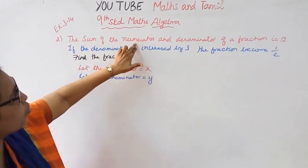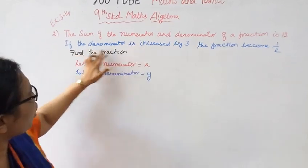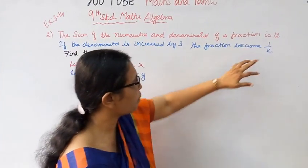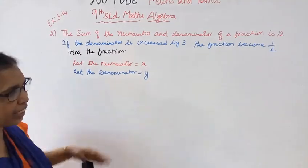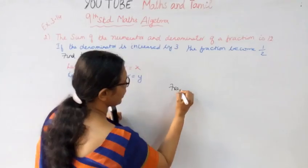The sum of the numerator and denominator of a fraction is 12. If the denominator is increased by 3, the fraction becomes 1/2. Find the fraction.